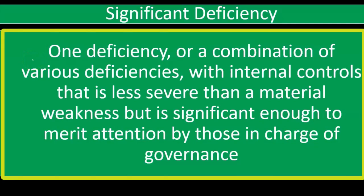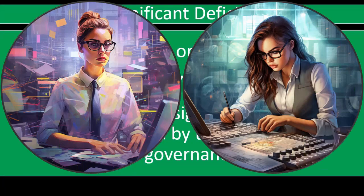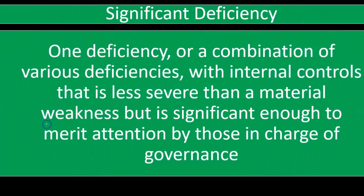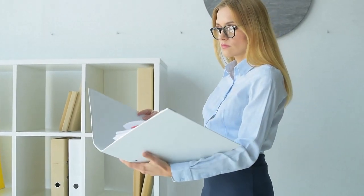A significant deficiency — one deficiency or a combination, so we might be talking about a single deficiency or a combination of them — with internal controls, the procedures to safeguard things like the financial statements being represented in accordance with a set of standards like generally accepted accounting principles. This is less severe than a material weakness, but is significant enough to merit attention by those in charge of governance — something we would want to bring to their attention.